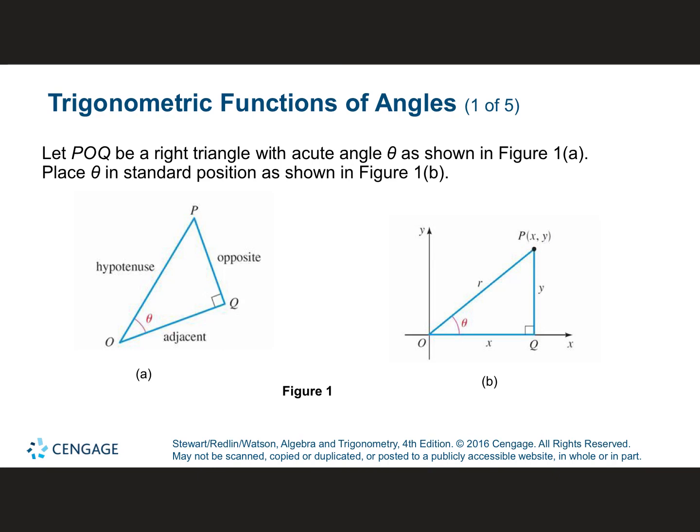You guys should have 5.3 parts 1 and 2. We're going to do both of them together. We're talking today about trig functions at any angle — not just here's a triangle, identify the opposite, adjacent, and hypotenuse side. We're doing the exact same thing, but you're not using the words opposite, hypotenuse, and adjacent. You're going to be using letters X, Y, and R.